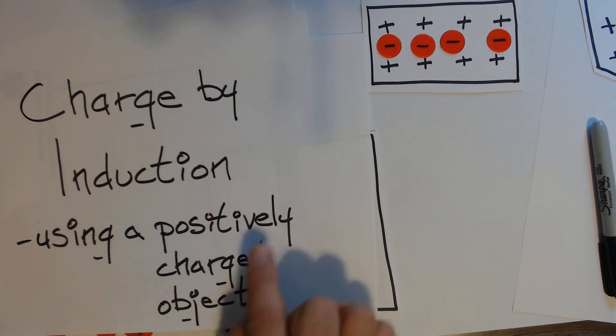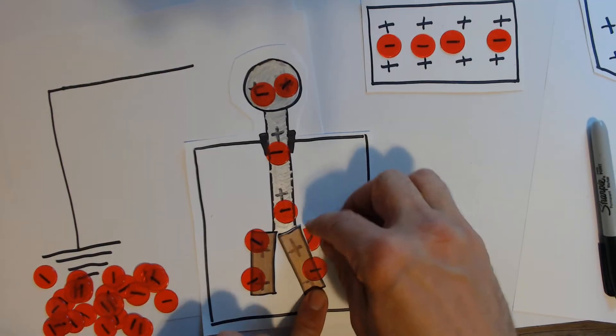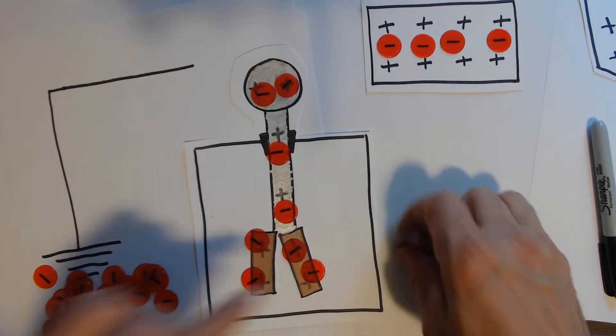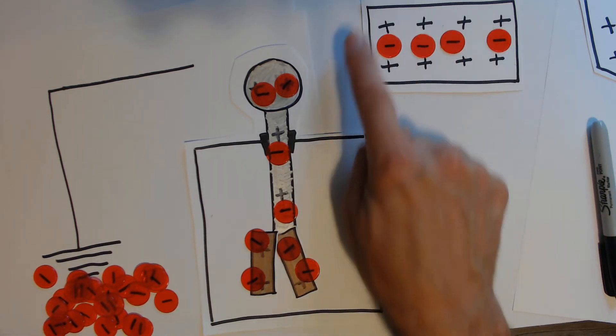Charging by induction using a positively charged object. This time again we're going to charge an electroscope. So here's an electroscope that is currently neutral and we're going to charge it with this positively charged object.